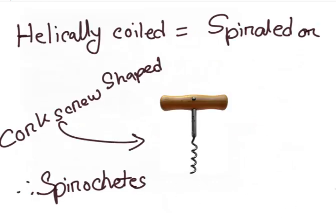Helically coiled means spiraled or corkscrew shape, hence they are named Spirochetes.